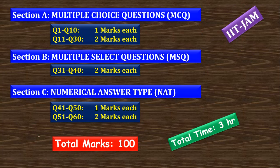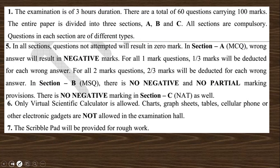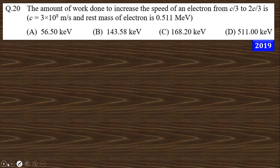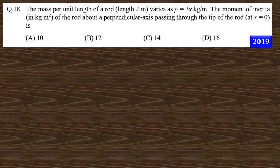Let us start with the first question. This is the question format, the instructions, and the syllabus of mechanics and GPM. The first question says: the mass per unit length of a rod whose length is 2 meters varies with length as lambda equal to 3x kg per meter. Find the moment of inertia of the rod about the perpendicular axis passing through the tip of the end. The situation is like this — this is a rod, and we want to find the moment of inertia about the axis at the tip of the rod.